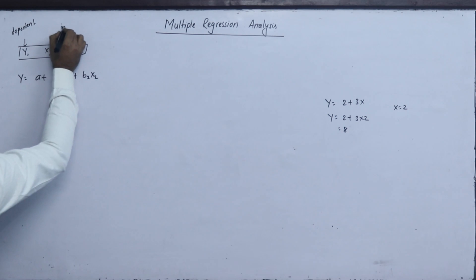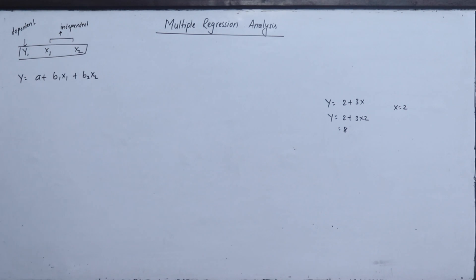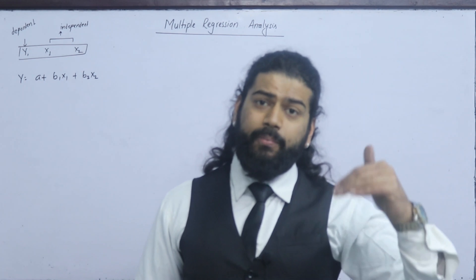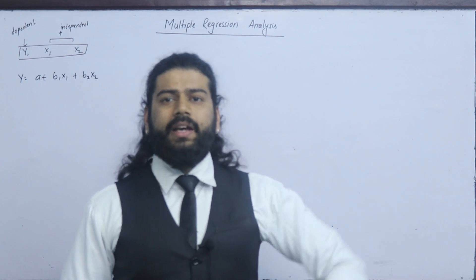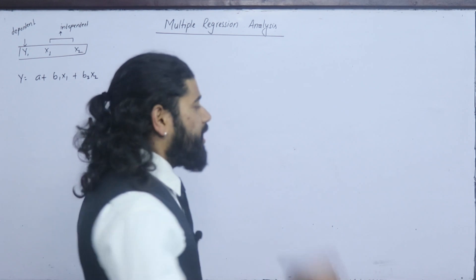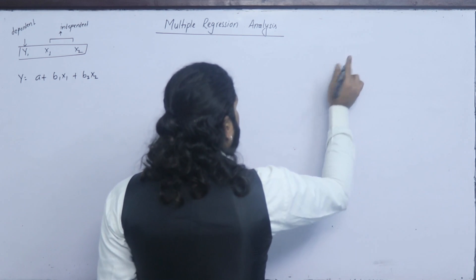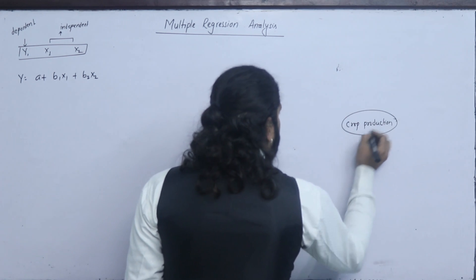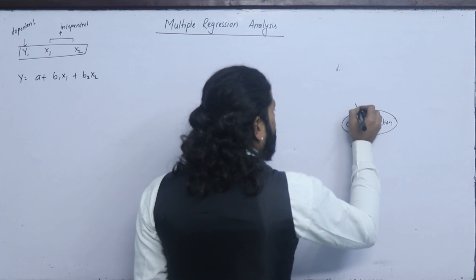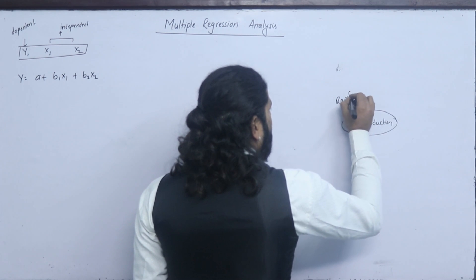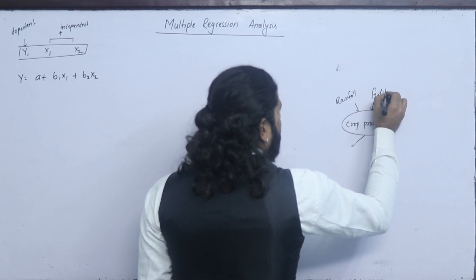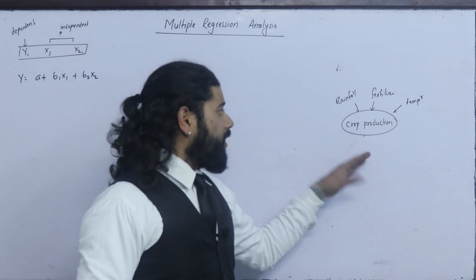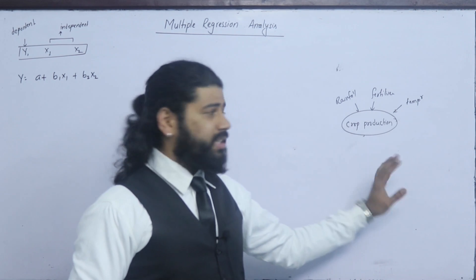What is an independent variable? What is independent and dependent? Independent is a value that stands on its own. Dependent is the value that depends on the independent variable. They are all independent variables that influence the dependent variable.